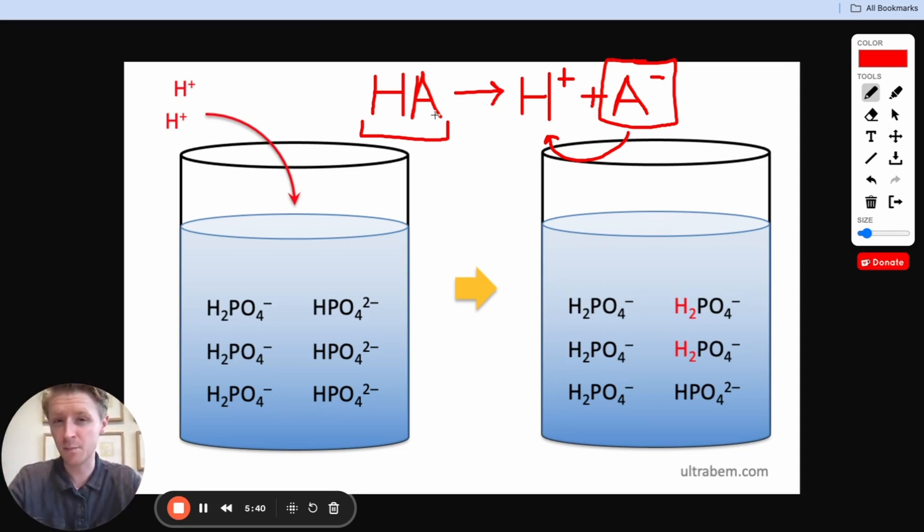A strong base is the same way, but opposite. It only wants to pick up protons. It doesn't want to give up protons. But if we have a weak acid and its conjugate base, or a weak base and its conjugate acid, we start to see that this reaction can work either way.